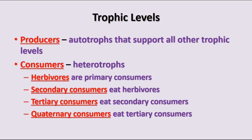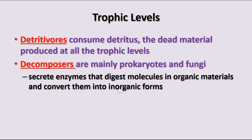Keep in mind that each organism doesn't necessarily eat only one thing. For instance, when you eat a salad, you're generally a herbivore or primary consumer, but if you eat a salad that has hard boiled eggs, cheese, and meat in it, then you're going to be a secondary as well as a primary consumer in that particular meal. Detritivores are organisms that consume detritus — the dead material that's left over, the leftovers produced at all the different levels.